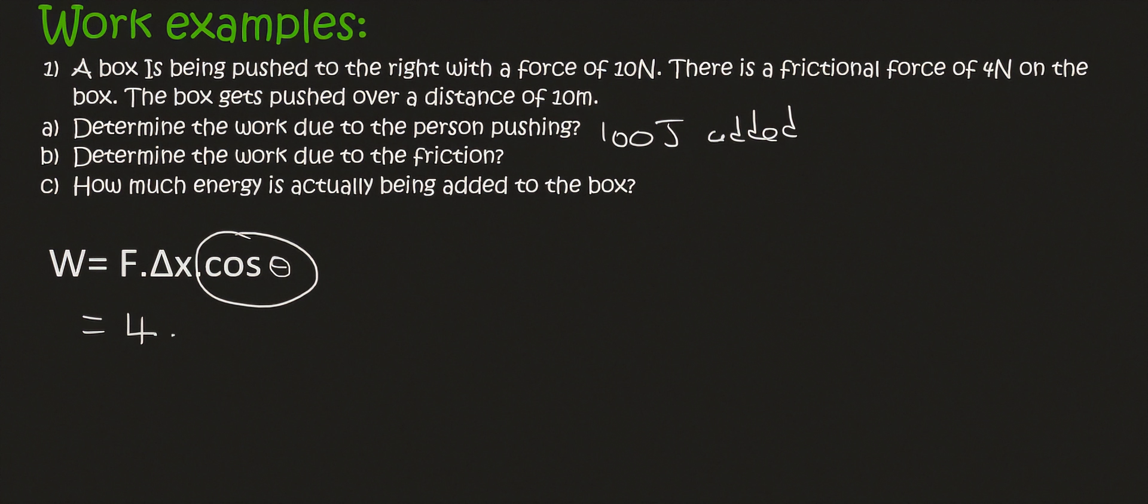And then the displacement was 10. Now, if you have a box that is busy moving to the right, but the friction is always going to try to go against that. So if you look at those two, the angle is 180. So we'll say here, cos of 180. Now cos of 180 is minus 1, and so you're going to end up with minus 40 joules.